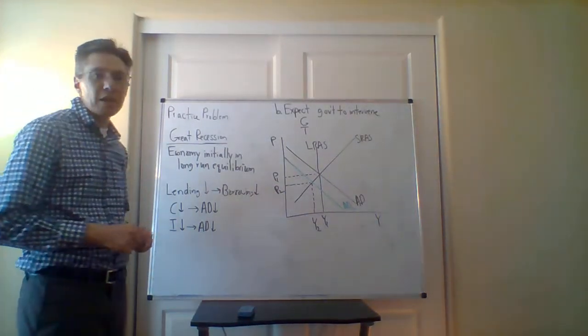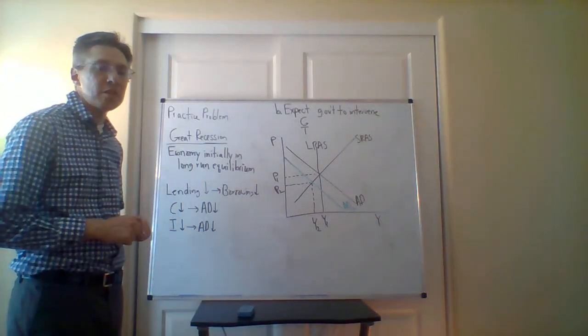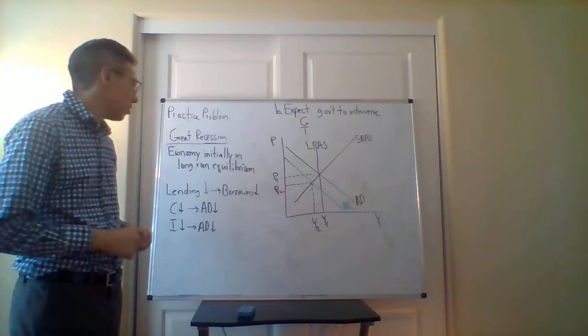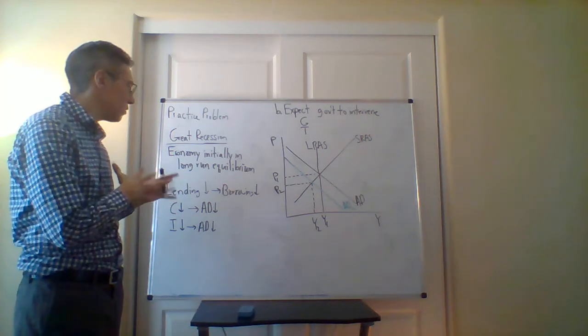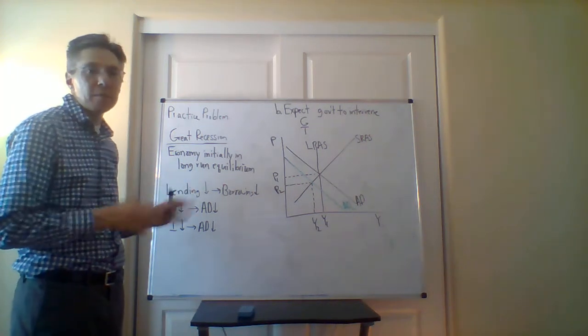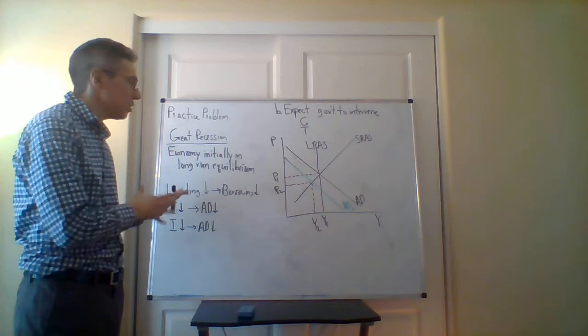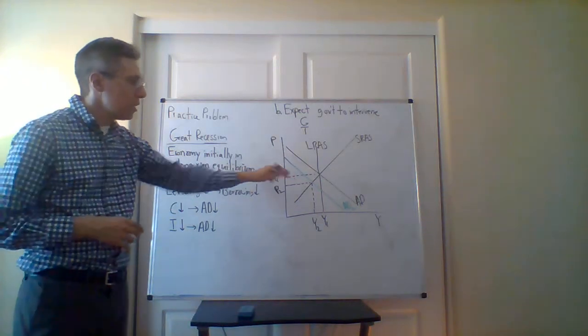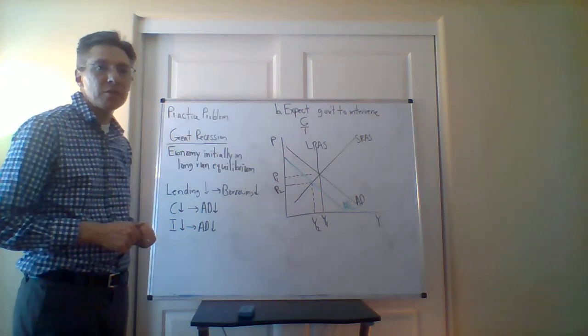For the second part of this practice problem, in terms of the Great Recession, we talked about what happens in terms of the decline in lending and borrowing. In terms of the effects, we see that the aggregate demand curve would shift to the left.